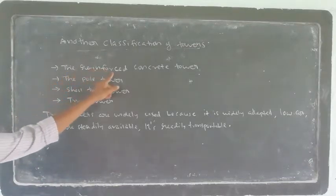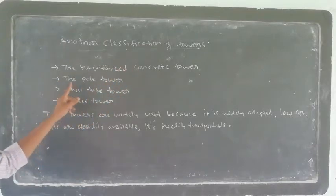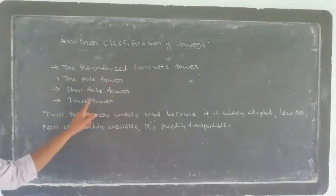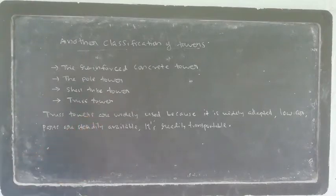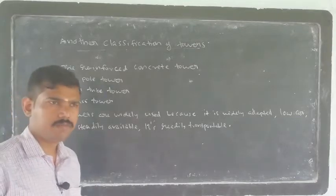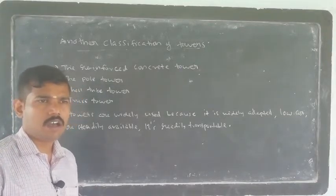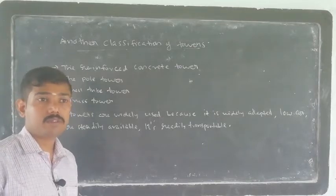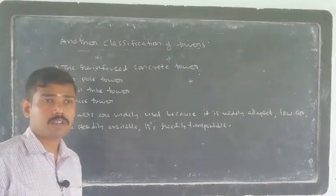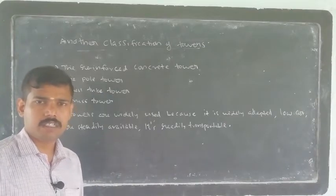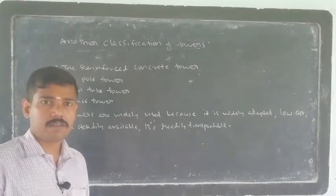The tower types include the reinforced concrete tower, the pole tower, shell tube tower, and truss tower. This is another classification of the tower. We also discussed the value classification: pin lattice tower, tube shaped tower, and guide tower.